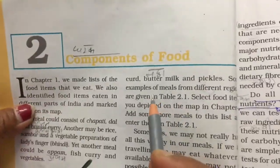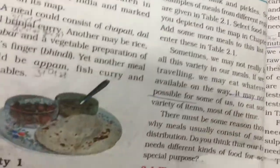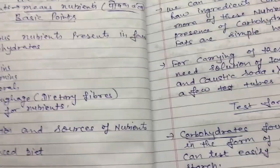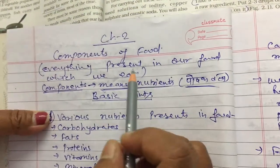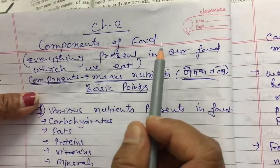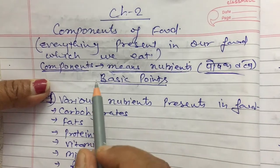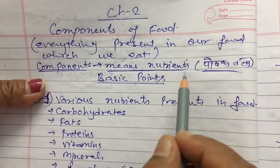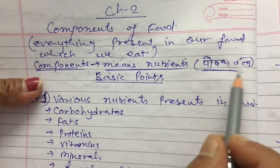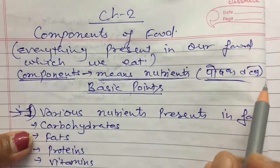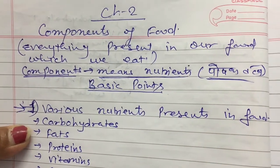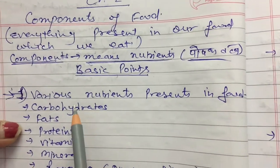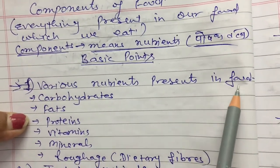Now we start our second chapter: Component of Food. Component of food means everything present in our food. Component of food means all the things that are present in our food — we call them components of food. Components means nutrients. Nutrients in Hindi are called 'poshak tatva.' In this chapter there are some basic points which we will discuss.